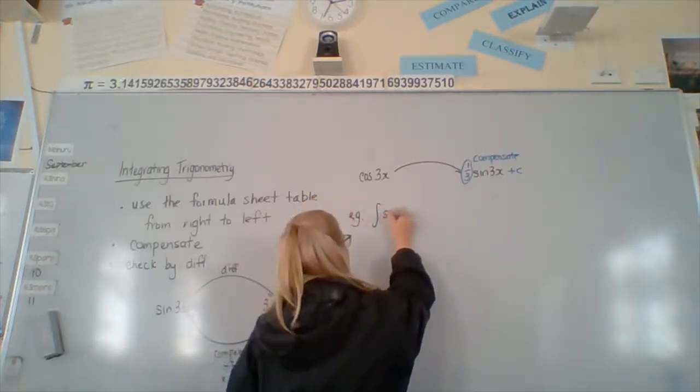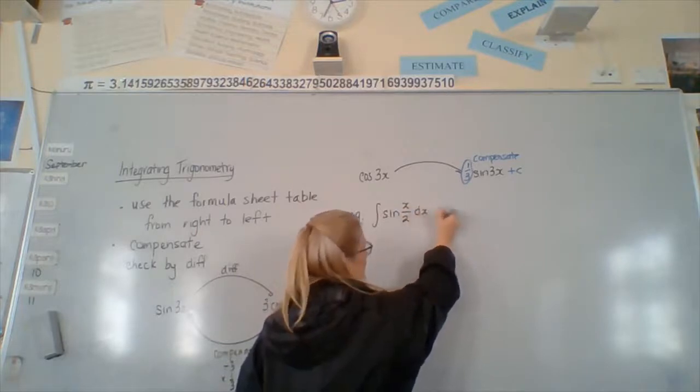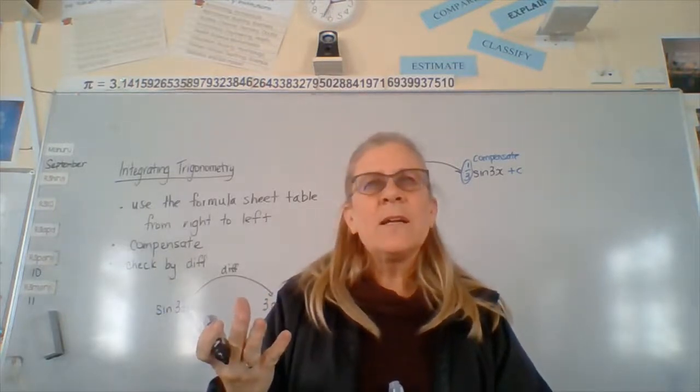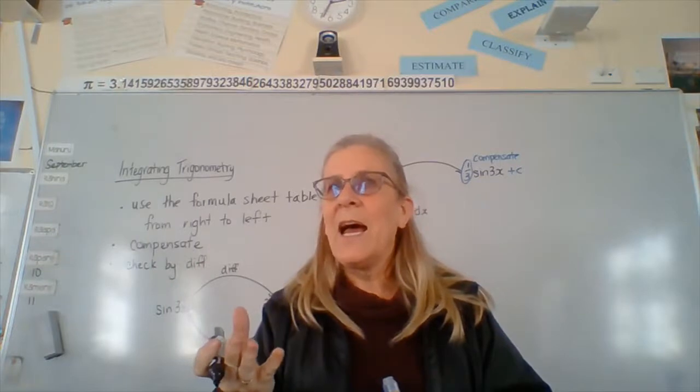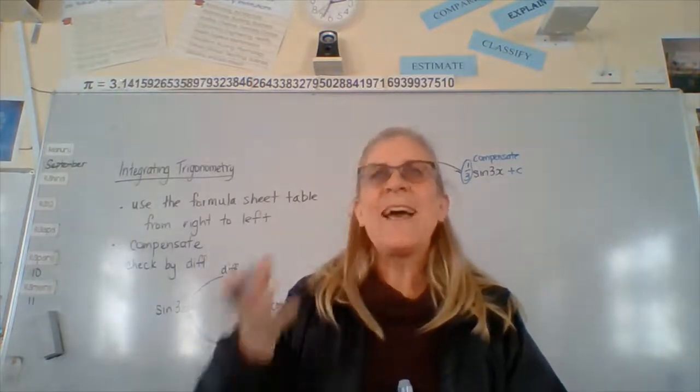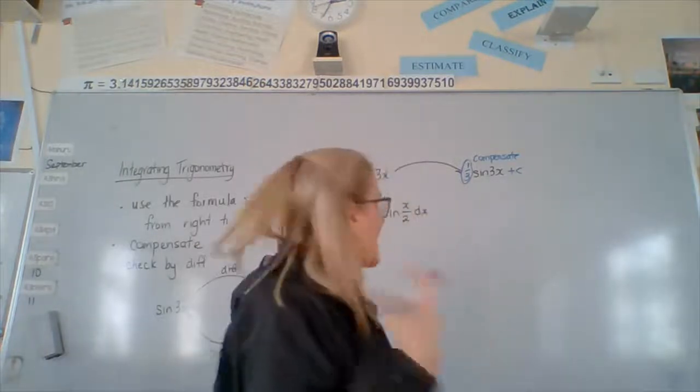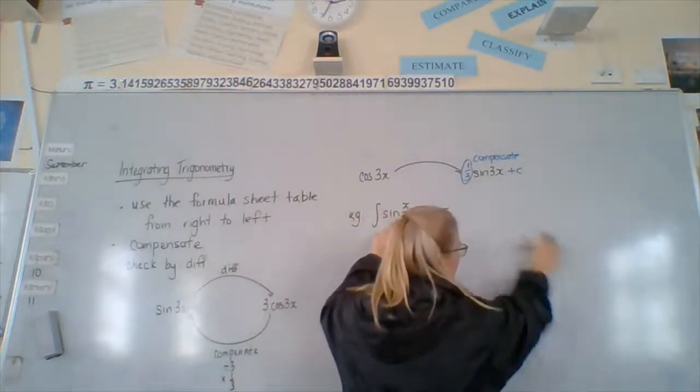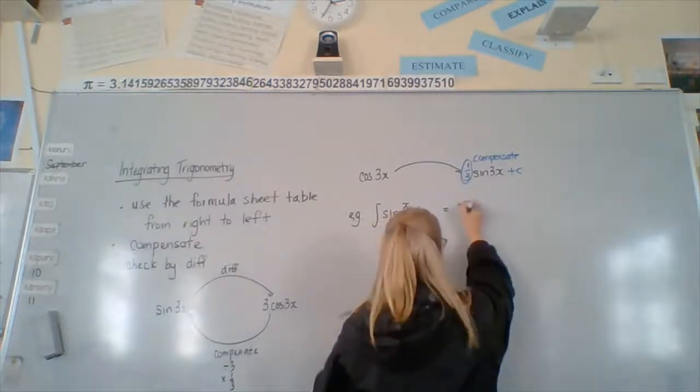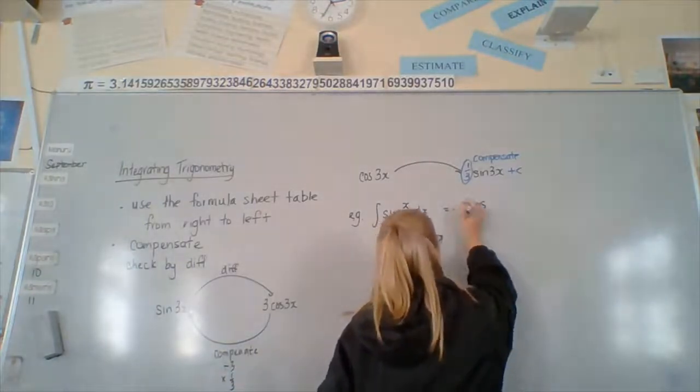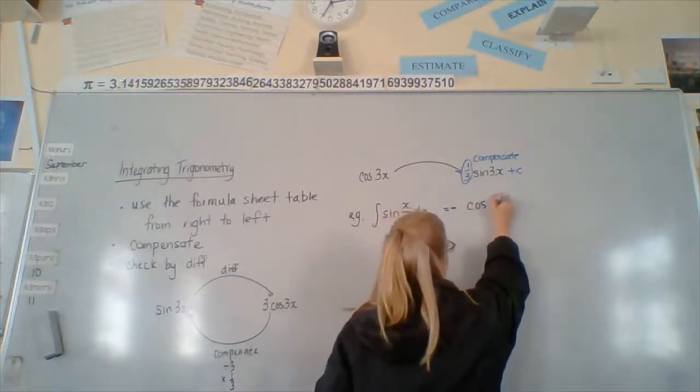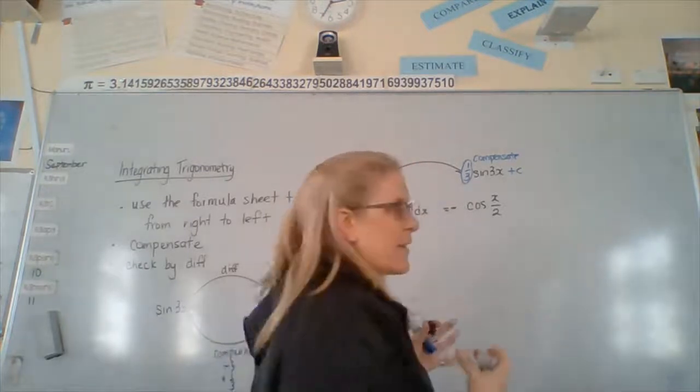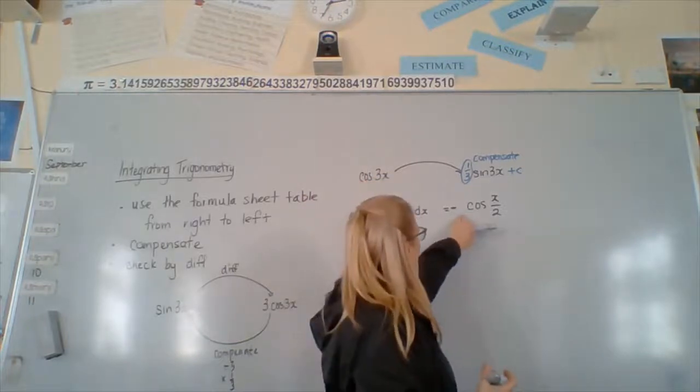Integrate sine x over 2 dx. What does x over 2 mean? Another way of saying it? A half x. All right. So, if we can remember that, a half x, that gives us a clue. Okay. So, we want to integrate it. So, sine. We'd look up in our table. It is a negative sine over here. It goes to a cosine. So, we're going to have negative cosine. Leave your space for your compensation. Negative cosine. And then what we want to do is we want to say, okay, so a half x what gave us nothing.